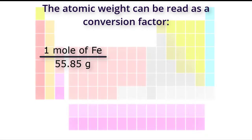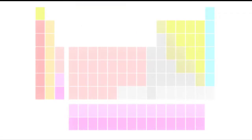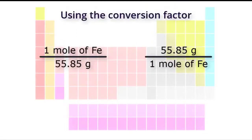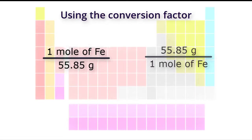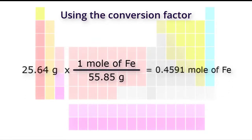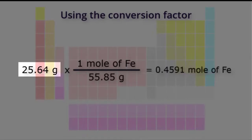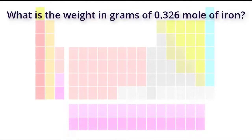The atomic weight can be read as a conversion factor of either one mole of iron per 55.85 grams, or 55.85 grams per one mole of iron. To convert grams of iron to moles of iron, we use the moles-per-gram conversion factor. Multiplying 25.64 grams by our conversion factor tells us that there are 0.4591 moles of iron in 25.64 grams of iron.